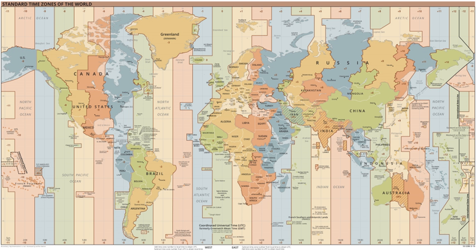UTC divides time into days, hours, minutes and seconds. Days are conventionally identified using the Gregorian calendar, but Julian day numbers can also be used. Each day contains 24 hours and each hour contains 60 minutes. The number of seconds in a minute is usually 60, but with an occasional leap second, it may be 61 or 59 instead.